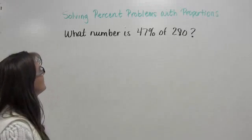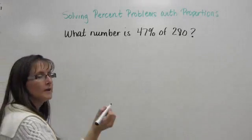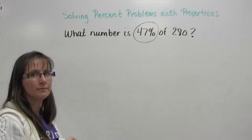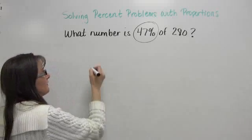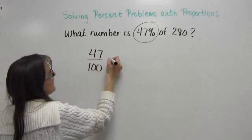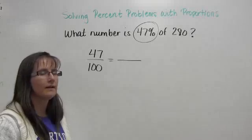So as I read this problem, I see what number is 47% of 280. Well, I know my first fraction is going to come from my 47%. I just rewrite that as a fraction, 47 over 100, and I'm going to say that that is equal to, I'm going to put my fraction line there.